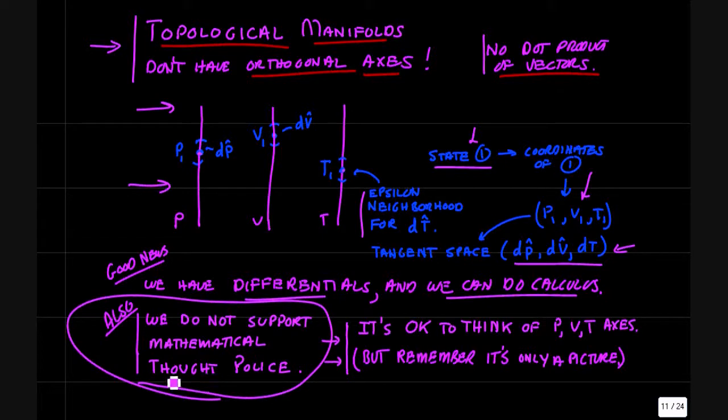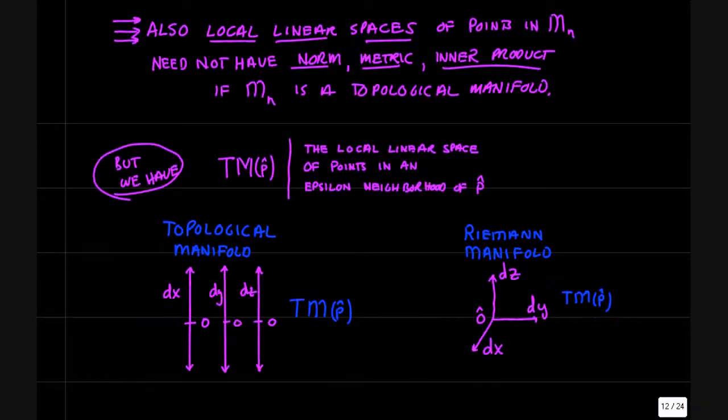Now let's come back off the high horse. I don't really like the idea of mathematical thought police. I think it's okay to think of anything you want. Intuition often involves pictures that are partially correct and partially incorrect. So as far as I'm concerned it's okay to think of PVT axes but just remember it's only a picture. If it's helpful use it, but it might be misleading in some cases so you have to watch your step when you're doing that. But as far as intuition goes you can think about anything you want and it's okay.